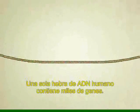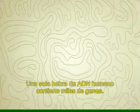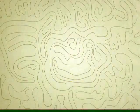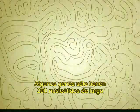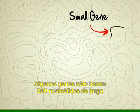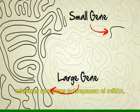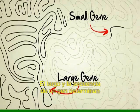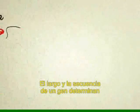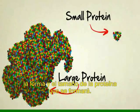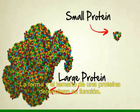A single strand of human DNA contains thousands of genes. Some genes are only about 200 nucleotides long; others are well over a million. The length and sequence of a gene determine the size and shape of the protein it builds. The size and shape of a protein determine the function that protein will have inside the body.